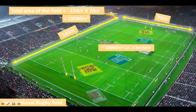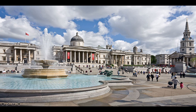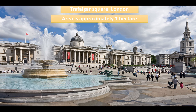Another example: this is the famous Trafalgar Square in London. The area of this square is also approximately one hectare.